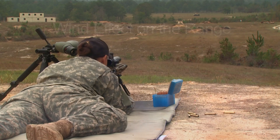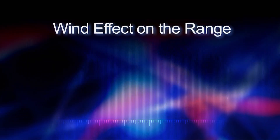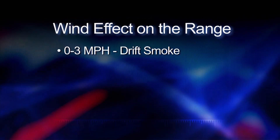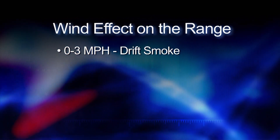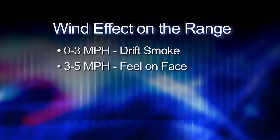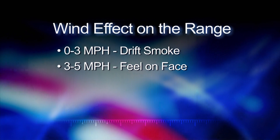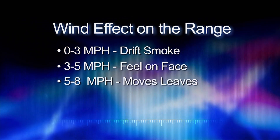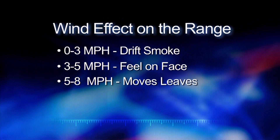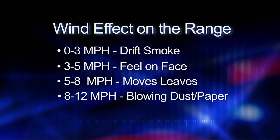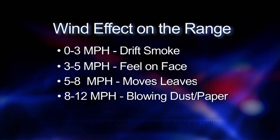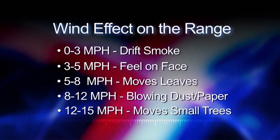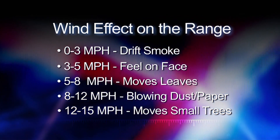Here are some guidelines for how wind affects different things on the range. 0 to 3 miles per hour: hardly felt, but smoke drifts. 3 to 5 miles per hour: felt lightly on the face. 5 to 8 miles per hour: keeps leaves in constant movement. 8 to 12 miles per hour: raises dust and loose paper. 12 to 15 miles per hour: causes small trees to sway.